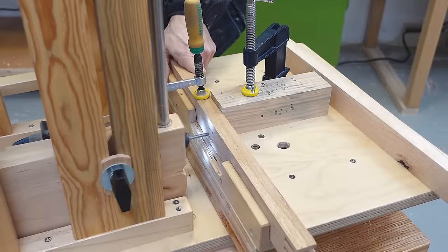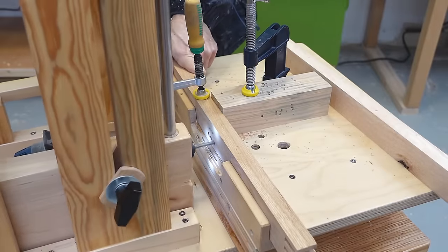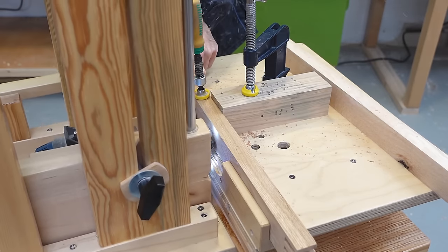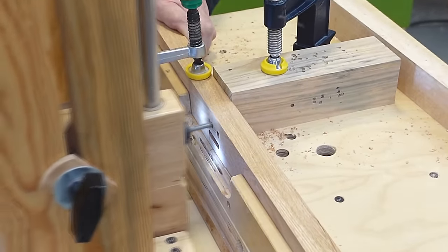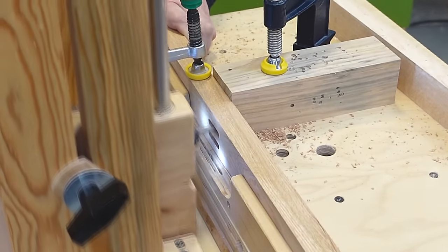And as usual cutting those mortises with my slot mortiser, plunging because that's easier for the side grain. And the screw adjustment is really nice because it allows me to very precisely space those mortises so the double tenon will fit.